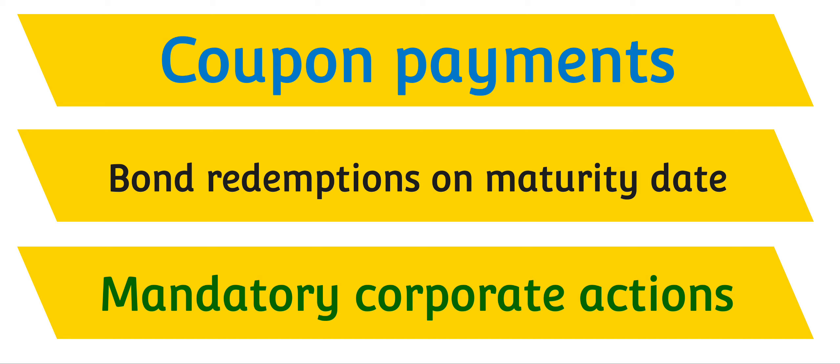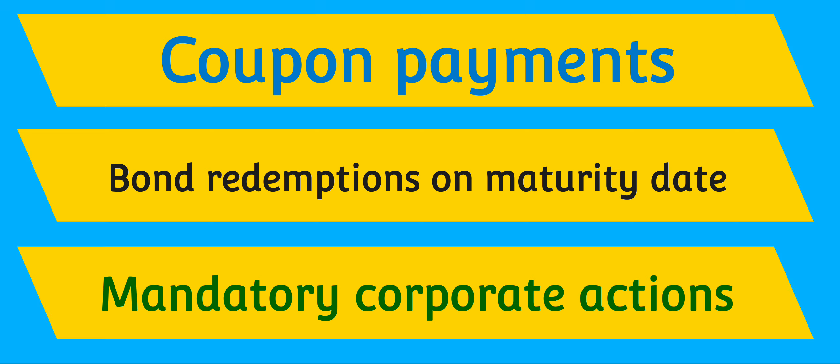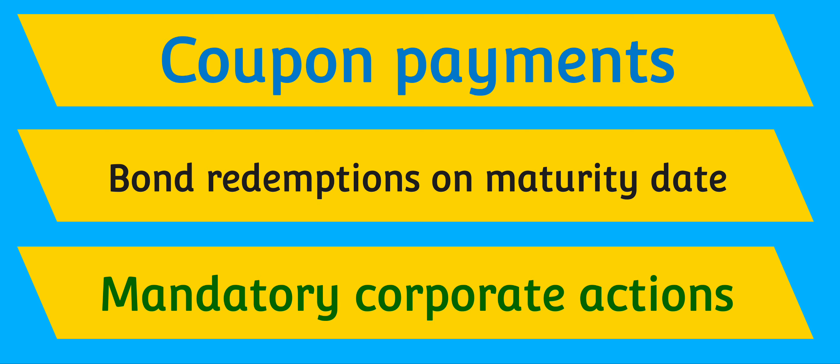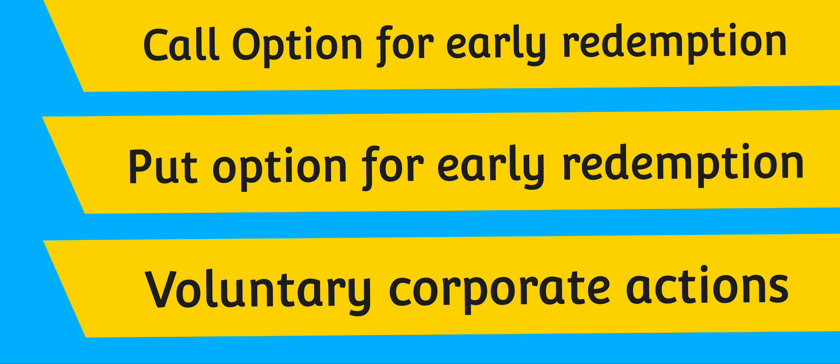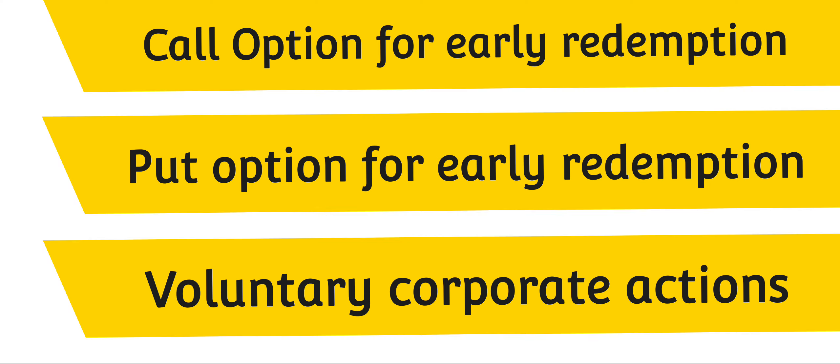The second question: what are the corporate actions on bonds or fixed income securities? Interviewers love this question because everybody has a strong sense of equity instruments but not bonds. You can fortify your answer by saying bond corporate actions include coupon payments — which can be semi-annual or quarterly — and bond redemptions on maturity date, which are examples of mandatory corporate actions for bonds.